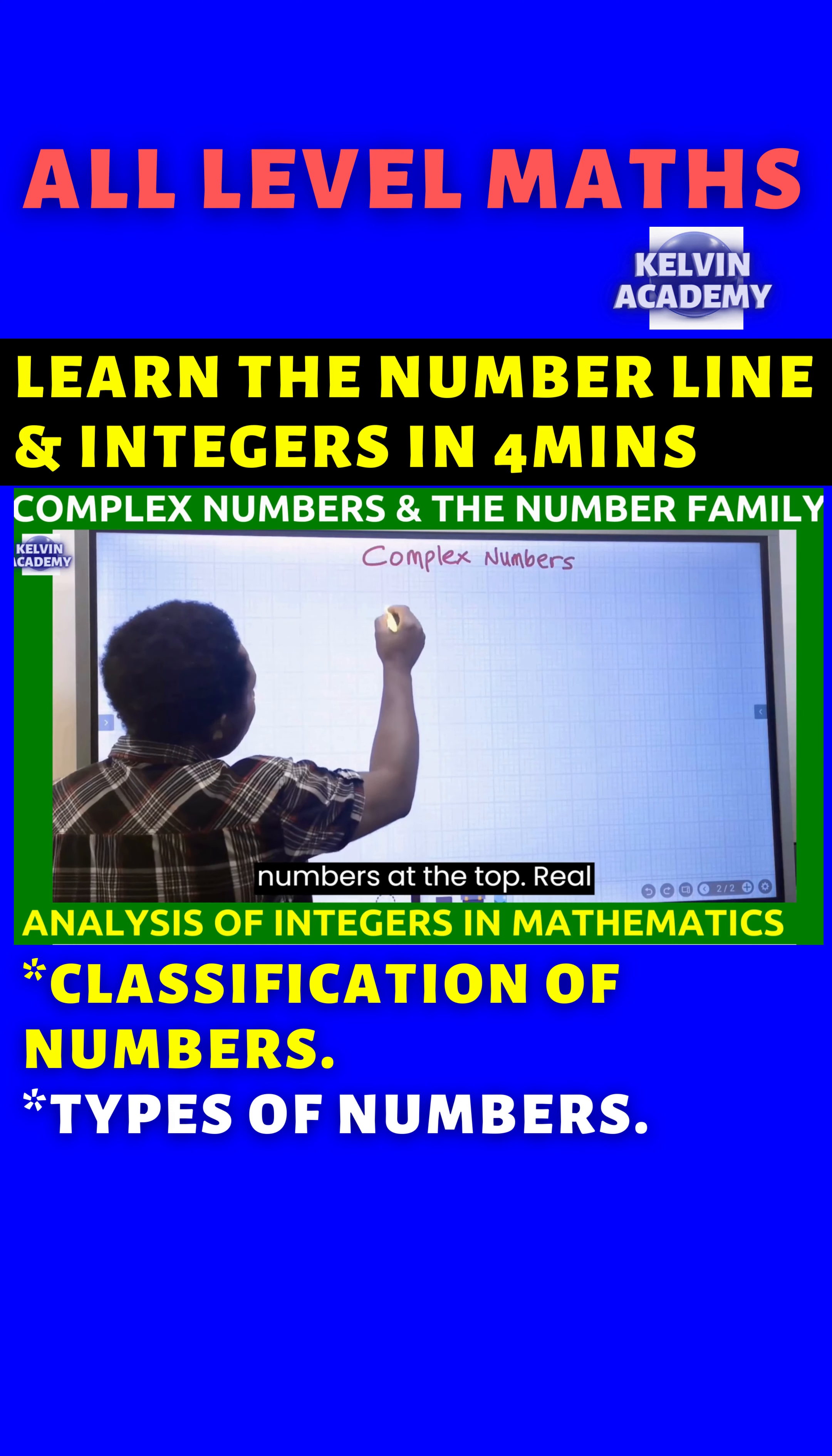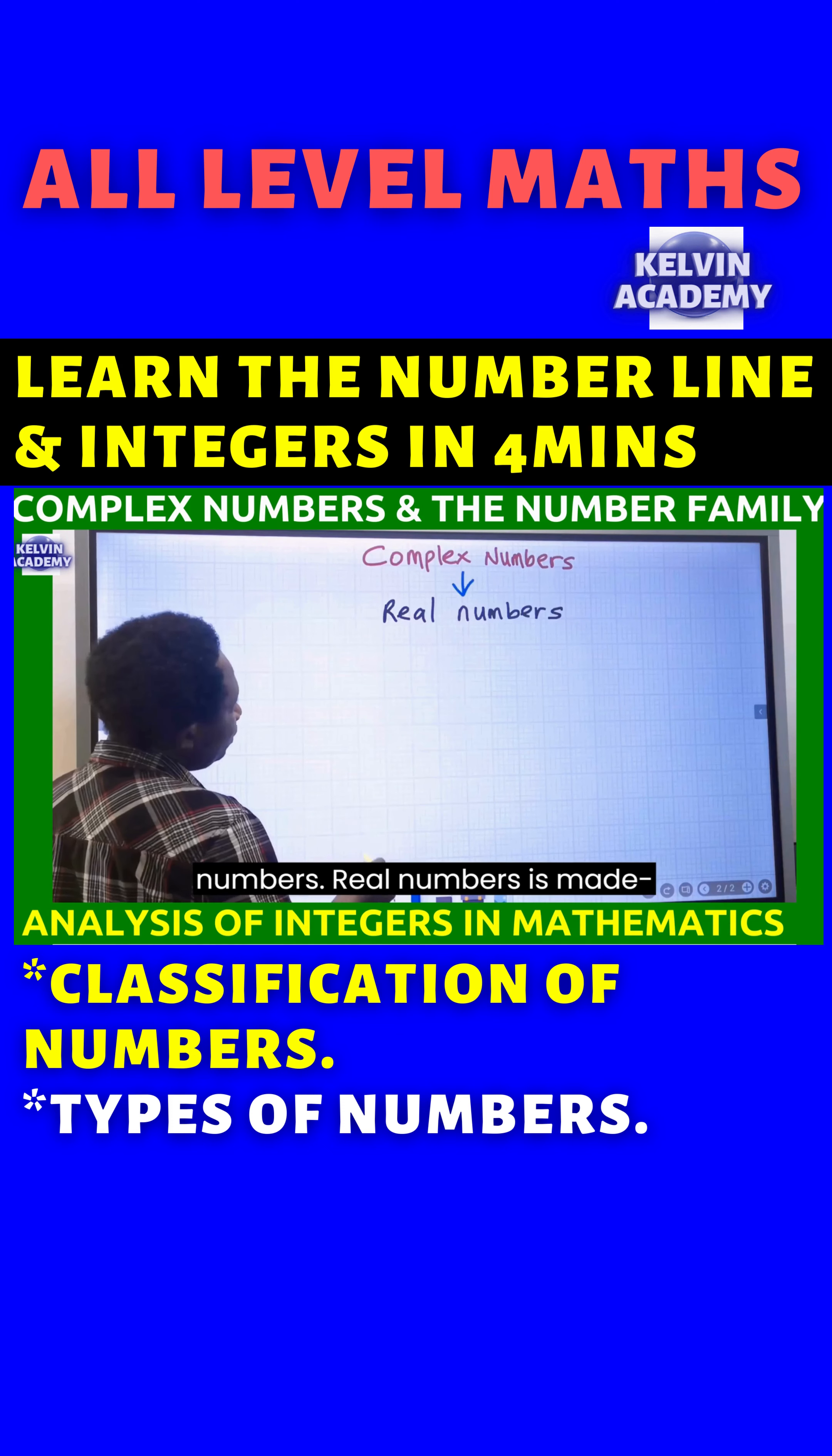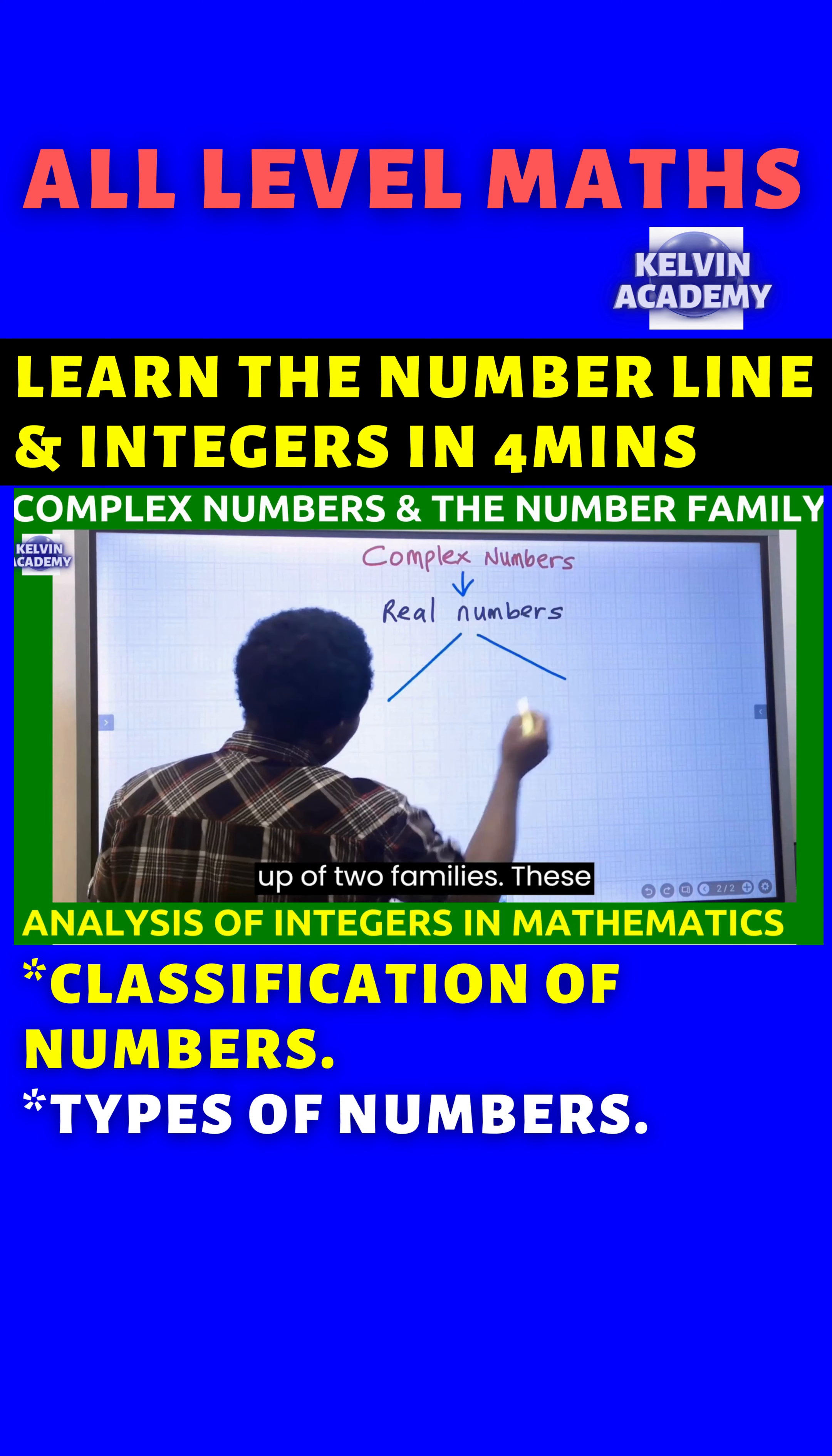In the family tree, we have complex numbers at the top. Real numbers are inside complex numbers. Real numbers is made up of two families.